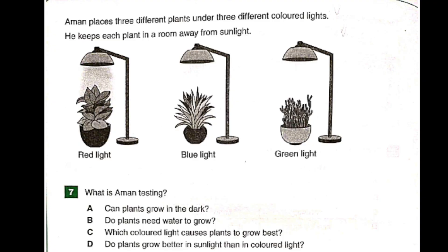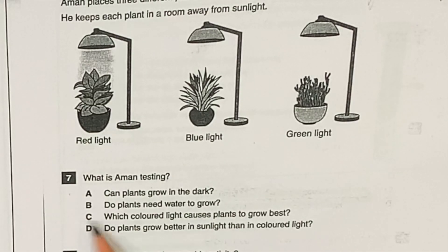Aman places three different plants under three different colored lights — red light, blue light, and green light. He keeps each plant in a room away from sunlight. Question number seven: What is Aman testing? A. Can plants grow in the dark? B. Do plants need water to grow? C. Which colored light causes plants to grow best? D. Do plants grow better in sunlight than in colored light? The answer is C: which colored light causes plants to grow best.